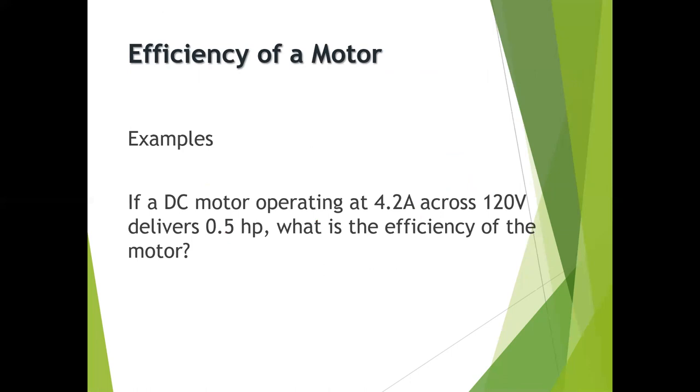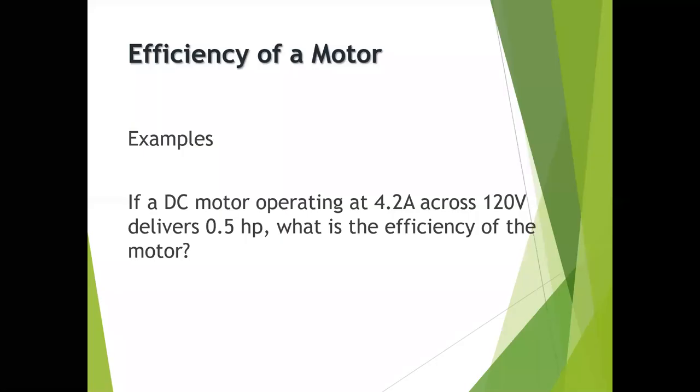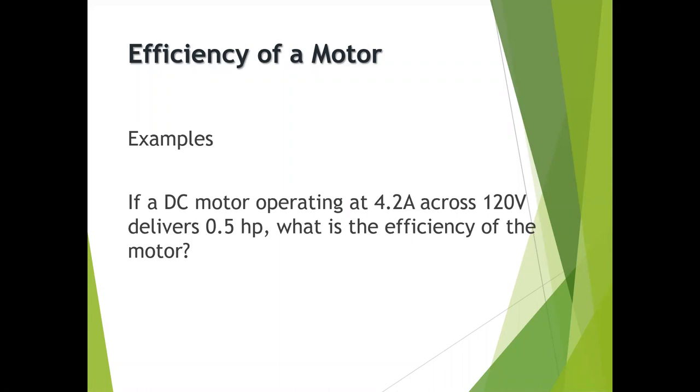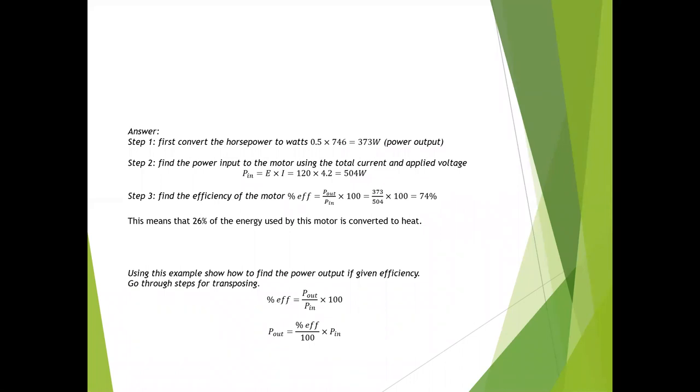Another example: if a DC motor operating at 4.2 amps across 120 volts delivers 0.5 horsepower, what is the efficiency of the motor? Give you two minutes to try and solve this one. 504, yep. We found our output at 373 and our input at 504, then divide them and multiply by 100. Essentially what this means is that 26% of the energy used by this motor was converted to heat. That sucks, we're not getting that back.